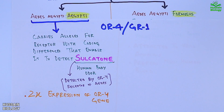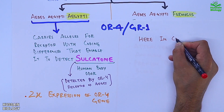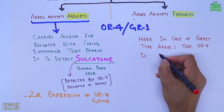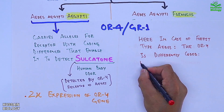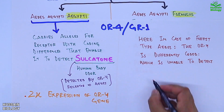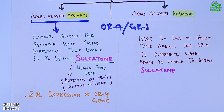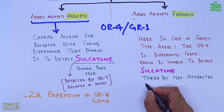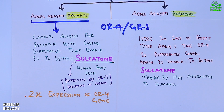Whereas in the forest type Aedes, OR4 is differently coded, which makes it unable to detect sulcatone — thereby not attracting it to humans — and it is also normally expressed.